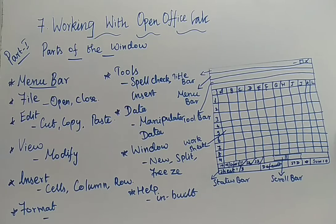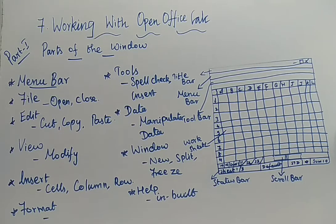Next is Data — under Data, manipulation that you are willing to do with the data available on the spreadsheet. For that we have commands under the Data menu. A few example commands are Sort, Filter, Validity, and Subtotal.